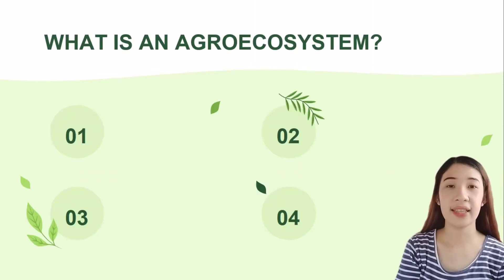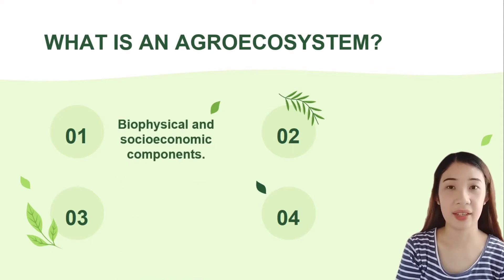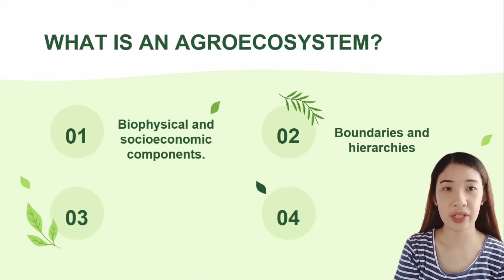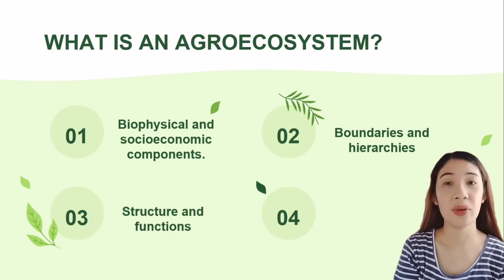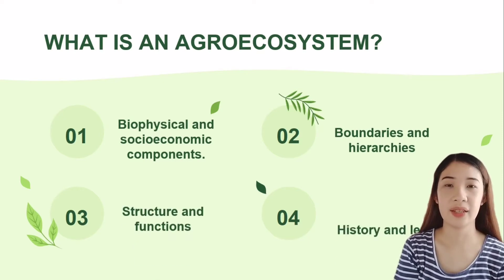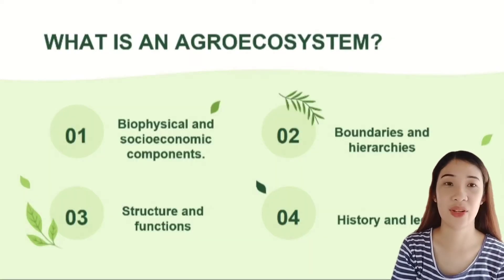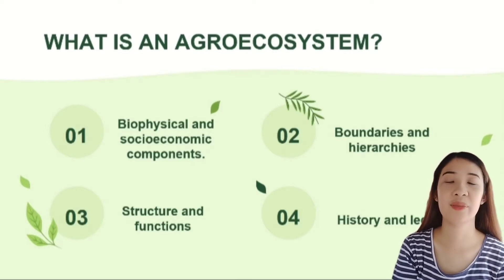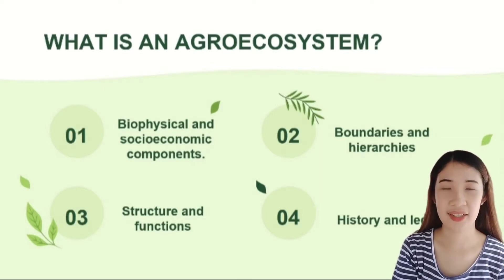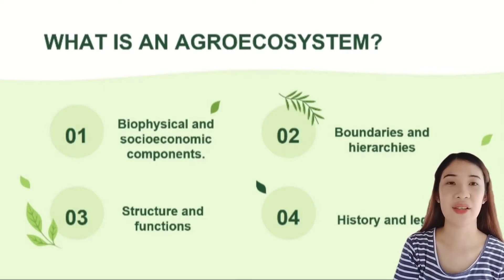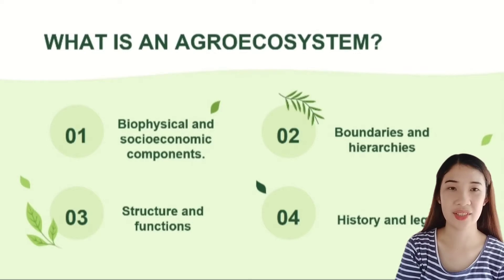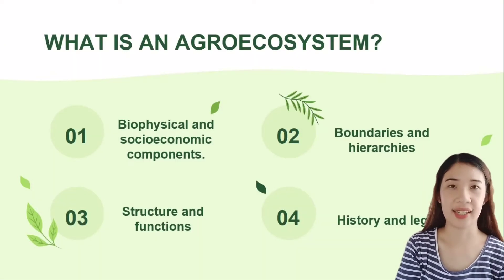What is an agro-ecosystem? It is a basic unit of study in agro-ecology, and it is somewhat arbitrary. It is also a biophysical and socio-economic entity defined by its boundaries and hierarchies, structures and functions, and history and legacy.